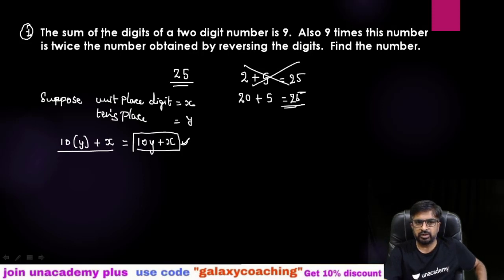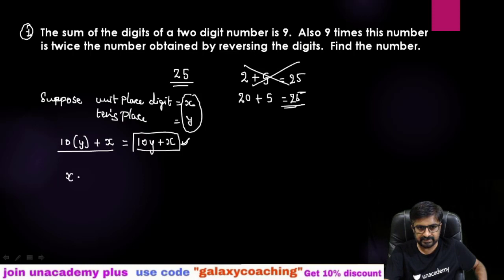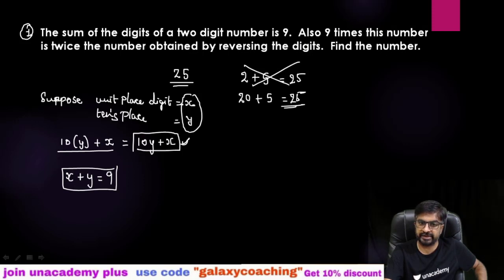So the sum of the digits of two digit number is nine means they are telling that the sum of only the digits is nine. So first equation will be x + y equals 9. Sum of the digits of tens and unit place is nine. They are not asking you the whole term. So take it as equation number one.